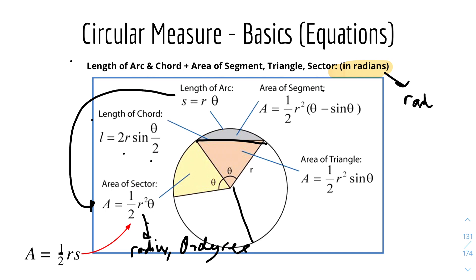The area of a segment — formed when you draw a chord, the region between the chord and the arc — is ½r²(θ − sinθ). The area of a triangle with two sides equal to the radius is ½r²sinθ. You could also use ½ab sinC, but since both a and b are the radius r, it simplifies to ½r²sinθ.